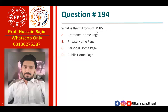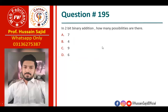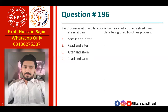PHP was initially called Personal Home Page; its latest name is Hypertext Preprocessor. In two-bit binary addition, there are four possibilities: 00, 01, 10, and 11. If a process is allowed to access memory cells outside its allowed area, it can read and alter data being used by other processes as well.